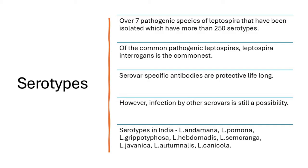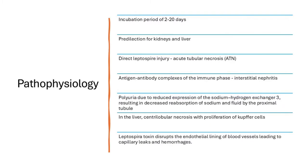Infection by other serotypes is still theoretically possible, though rare. When leptospira enter the human system, there's an incubation period of around 2 to 20 days. They have a predilection for the kidneys and liver. They can cause acute tubular necrosis; immune-mediated complexes later cause interstitial nephritis. Non-oliguric renal failure — a key feature — results from decreased sodium reabsorption in the proximal tubule due to reduced expression of the sodium-hydrogen exchanger 3. In the liver, centrilobular necrosis with proliferation of Kupffer cells occurs, and the toxin disrupts endothelial lining, leading to capillary leaks and hemorrhages.